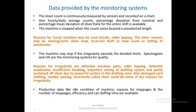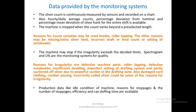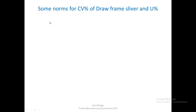Production data such as idle condition of the machine — how much time it has remained stopped in the entire shift — is also recorded. Reasons for stoppages, number of stoppages, efficiency, and can doffing time are all readily available. Now let us take a look at some norms or standards for CV and U percentage.